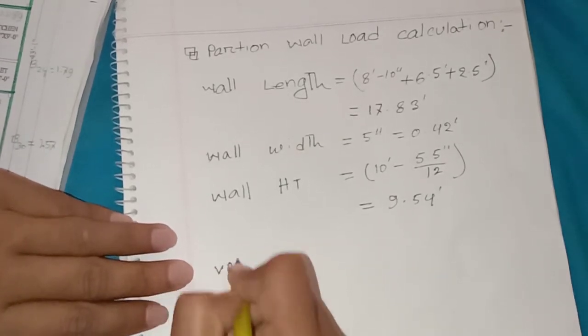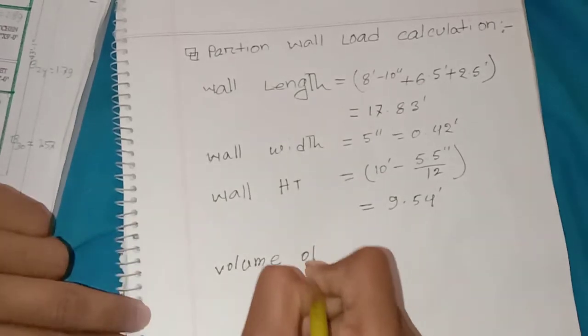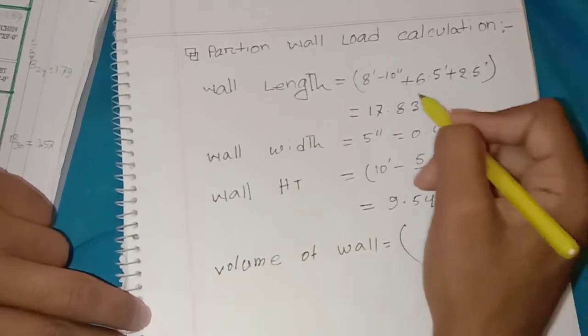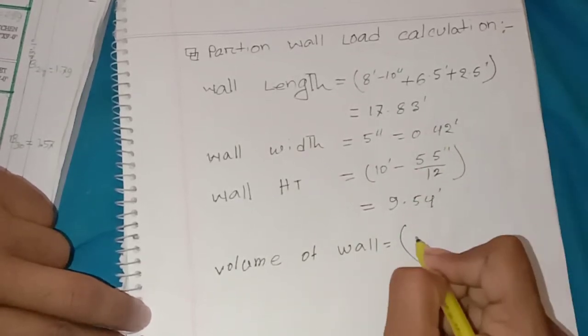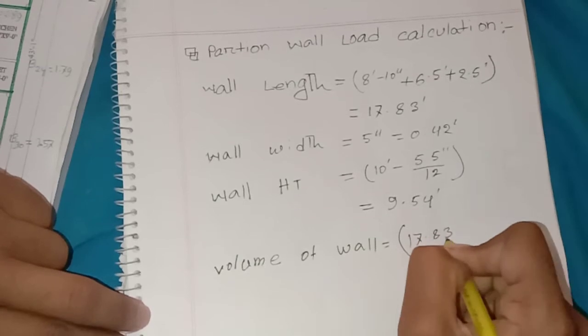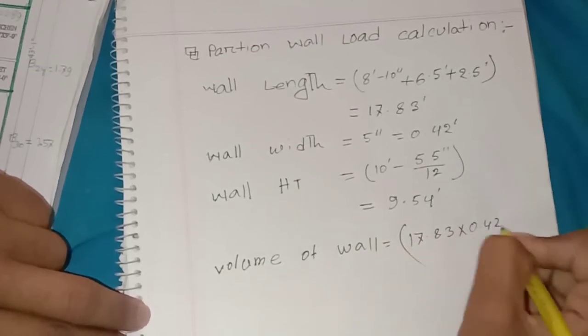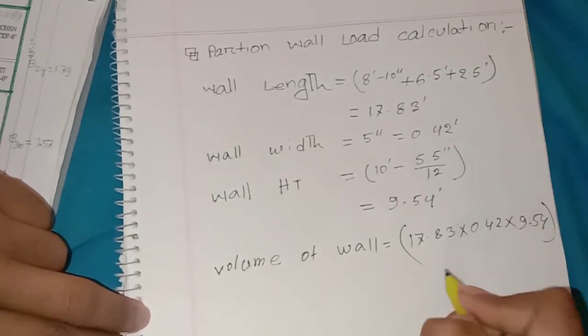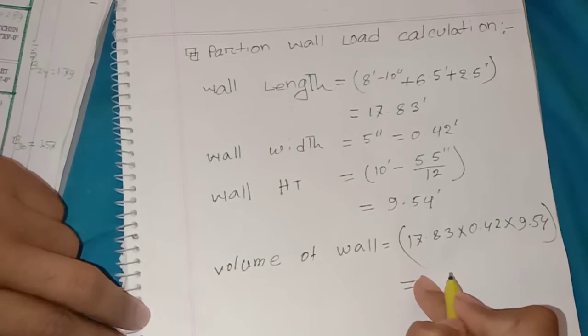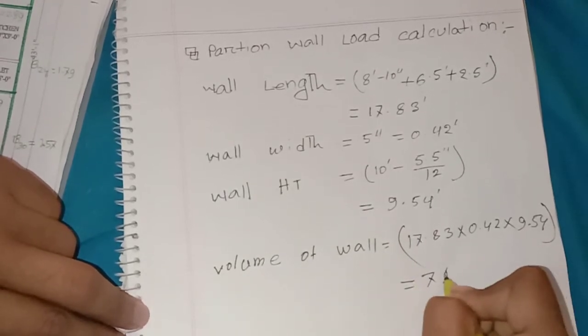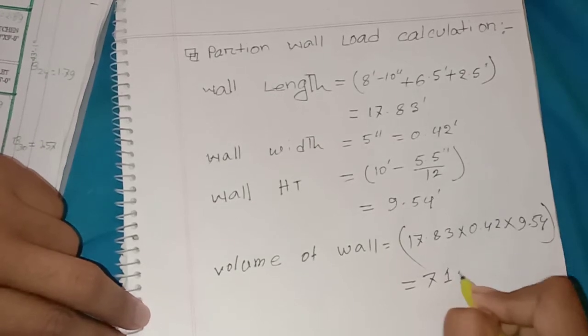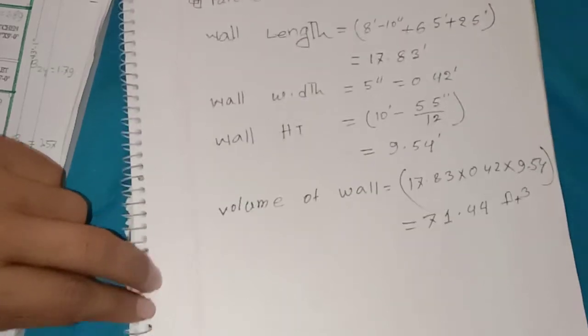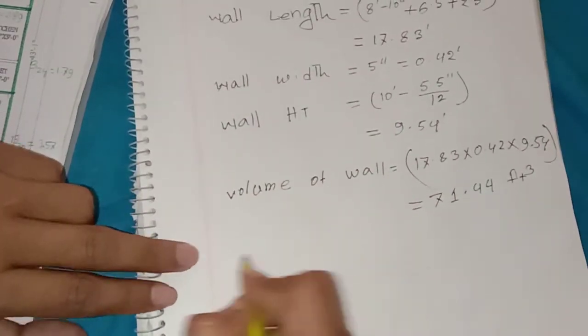Now we calculate the volume of the wall. Volume equals 7.83 times 0.42 times 9.54, which gives us a total of 31.44 cubic feet.